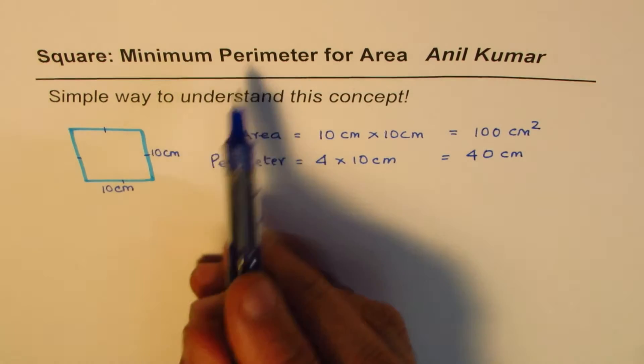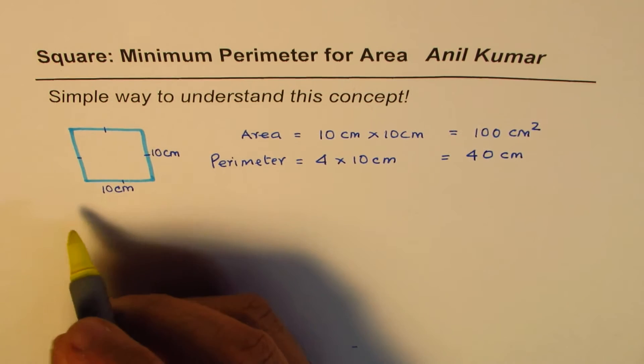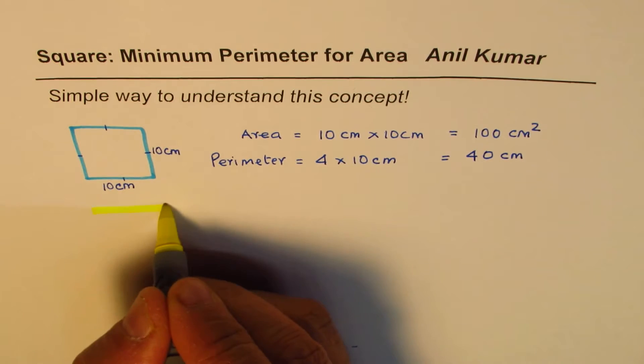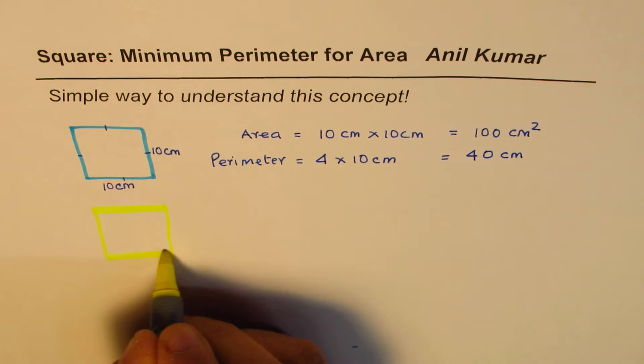So for that, what I do here is I will cut a portion of this square. Let me show you how. We have this square, right? This is our 10 by 10 square.